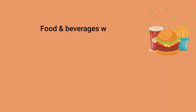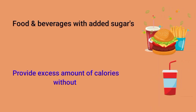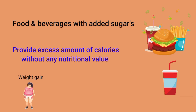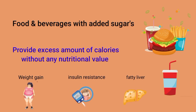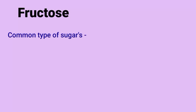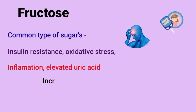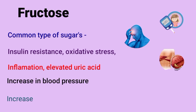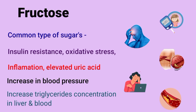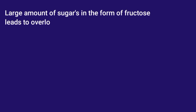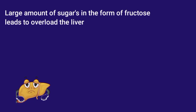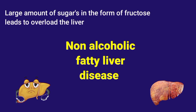The second food category to avoid is added sugars. Foods and beverages with added sugars provide excess calories without any nutritional value, contributing to extra weight gain, insulin resistance, and fatty liver. Fructose is a common type of sugar, and its overconsumption may lead to insulin resistance, oxidative stress, inflammation, elevated uric acid, increased blood pressure, and increased triglyceride concentration in the liver and blood. Taking large amounts of fructose can overload the liver, leading to non-alcoholic fatty liver disease, also known as NAFLD.